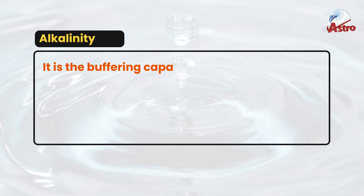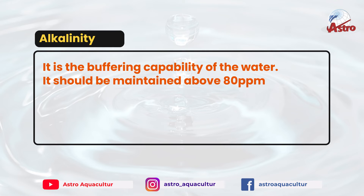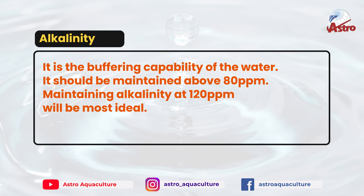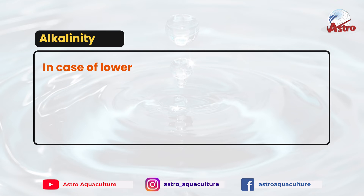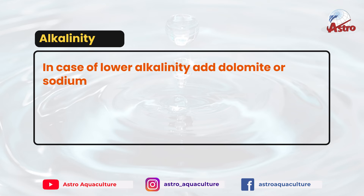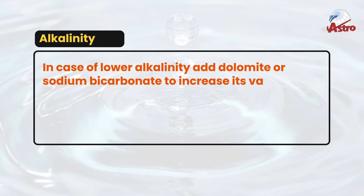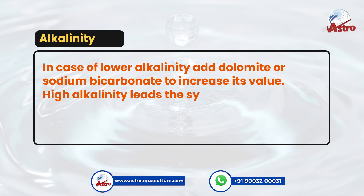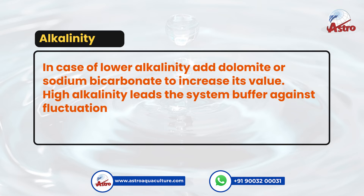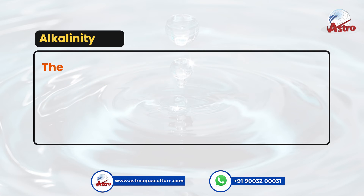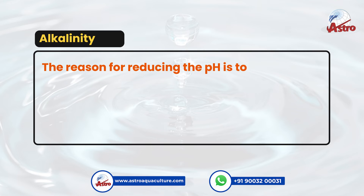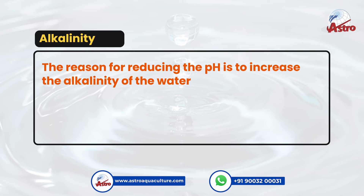Alkalinity is the buffering capability of the water. It should be maintained above 80 ppm; maintaining 120 ppm of alkalinity is appreciable. In case of lower alkalinity, add dolomite or sodium bicarbonate to increase its value. High alkalinity helps the system buffer against fluctuation and acidity.